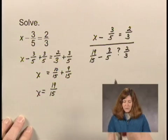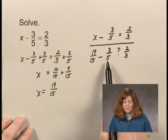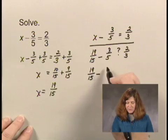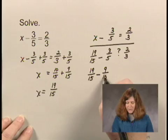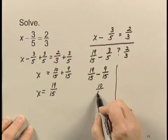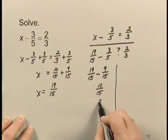Let's write 3 fifths with a denominator of 15. We have 19 fifteenths minus 9 fifteenths, which is 10 fifteenths, which is 2 thirds.